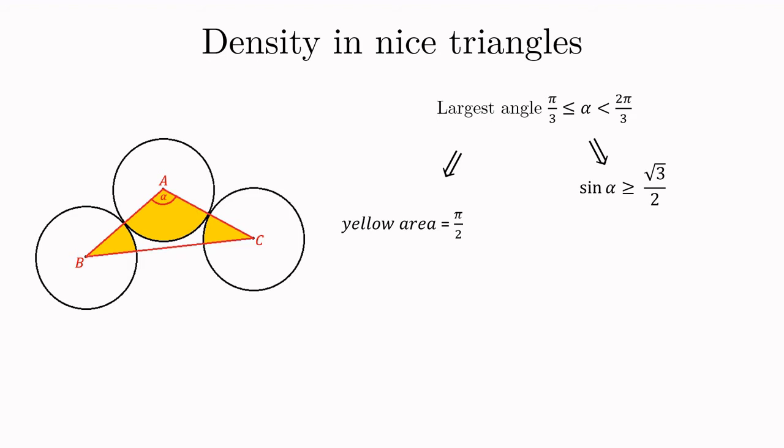If we look up some sine tables we'll see that the sine of alpha is at least the square root of 3 over 2. This allows us to estimate the area of the triangle. By a classic formula this area is given as the product b times c of the two sides adjacent to alpha times the sine of alpha all divided by 2. Since b and c have a length of at least two this area turns out to be at least the square root of 3. Combining these two facts we obtain that the density of the packing inside the nice triangle is at most pi over the square root of 12 which is as you may recall exactly the density of the hexagonal packing.